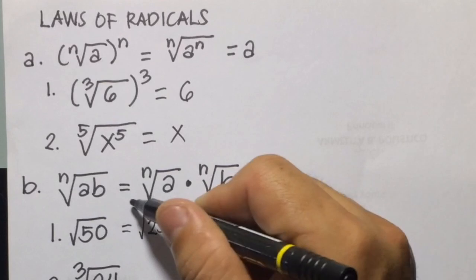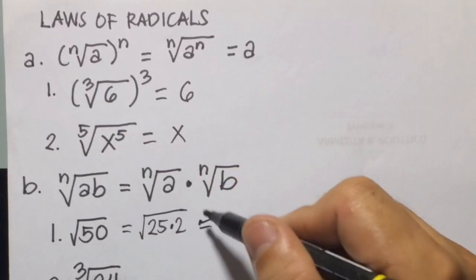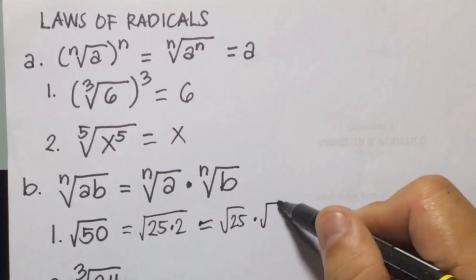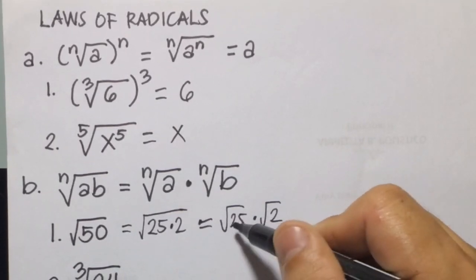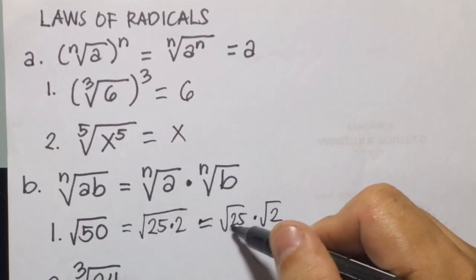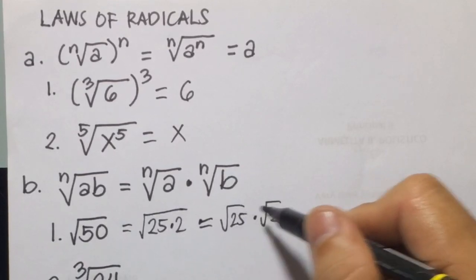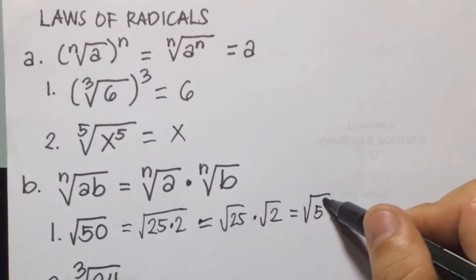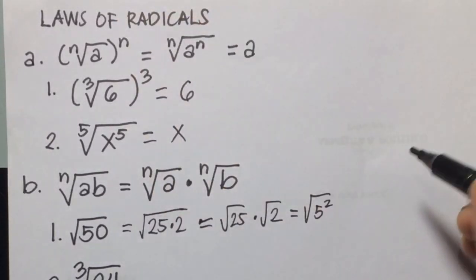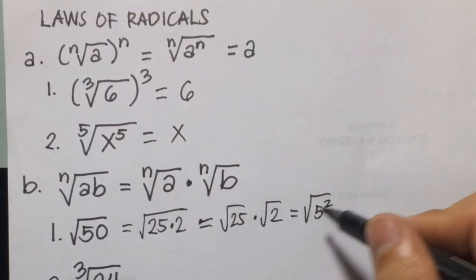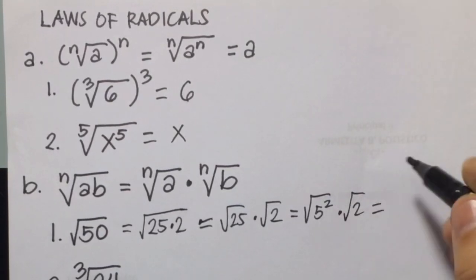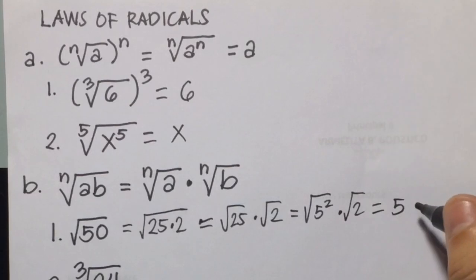So 50 is 25 times 2, giving us square root of 25 times square root of 2. Since 25 is a perfect square, we can express it as square root of 5 squared. Applying law number 1, square root of 5 squared is 5, so the answer is 5 times the square root of 2.